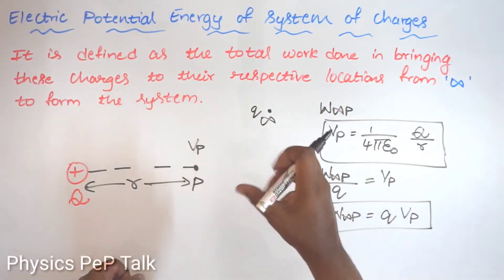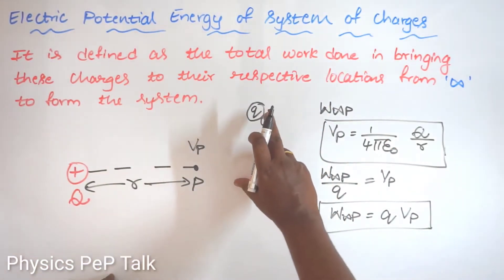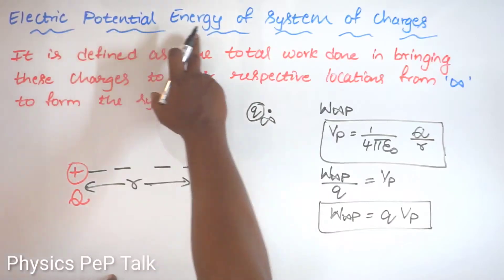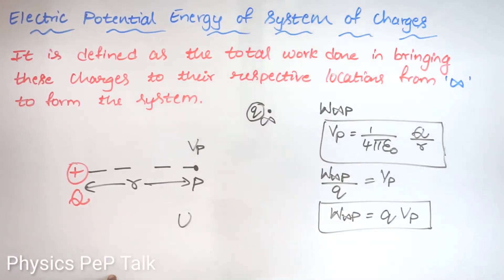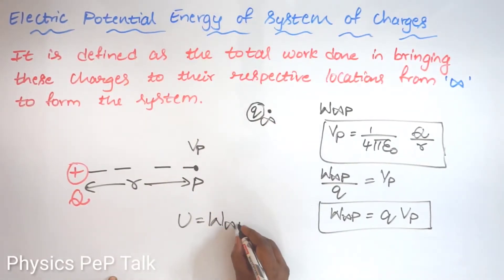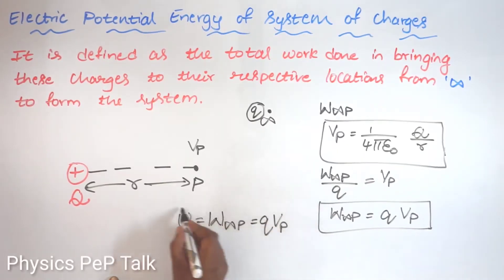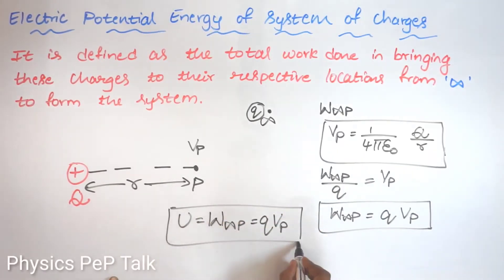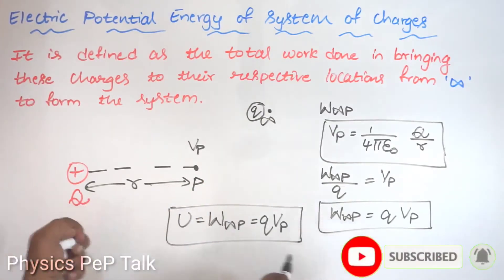The amount of work that I have done on that charge small q will be stored in that charge in the form of potential energy, and I will represent it by U. This potential energy will be equal to the amount of work done in bringing the charge from infinity to that point, which will be equal to q·Vp. This is the electric potential energy at point P due to a single point charge.